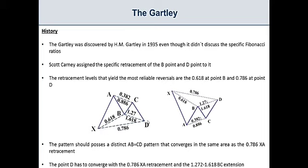The D point has to retrace 78.6 percent of the XA leg, but it also has to be an extension of the ABC move. An extension that has to be between 127 and 161.8.